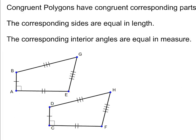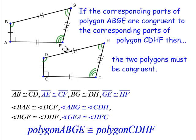If we have two polygons that are congruent, so in this case polygon ABGE is congruent to polygon CDHF, then all the corresponding parts are congruent. They are all equal in measure. If these two figures, these two polygons, are congruent to each other, then the corresponding parts are congruent.